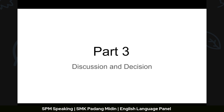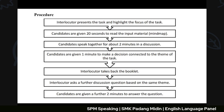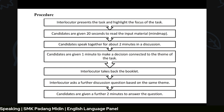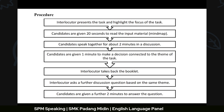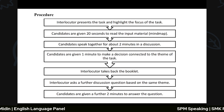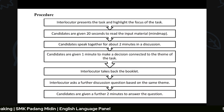For Part Three — discussion and decision — here is the procedure: the interlocutor presents the task and highlights the focus. Candidates get twenty seconds to read the mind map input. They then speak together for about two minutes in a discussion. After that, candidates are given one minute to make a decision connected to the theme. The interlocutor then takes back the booklet and asks a further question based on the same theme.